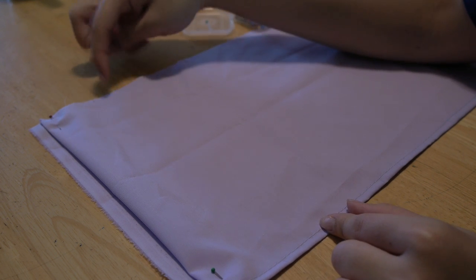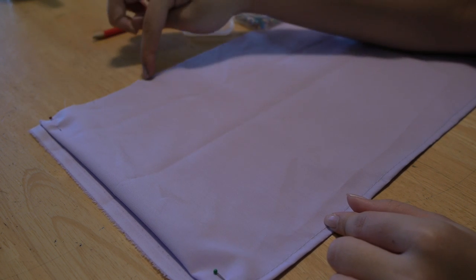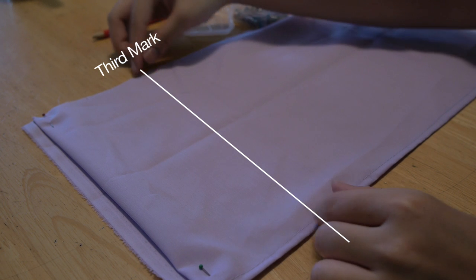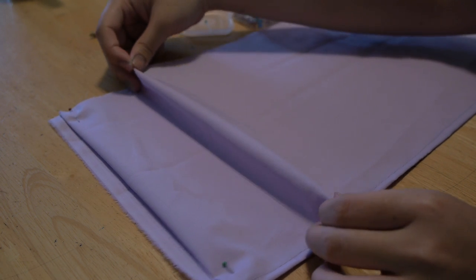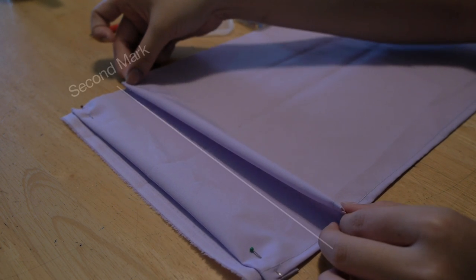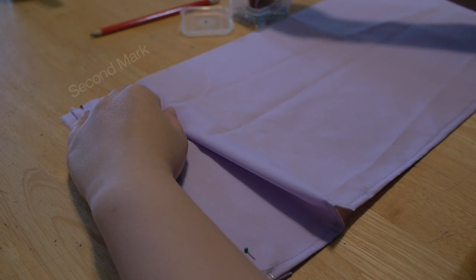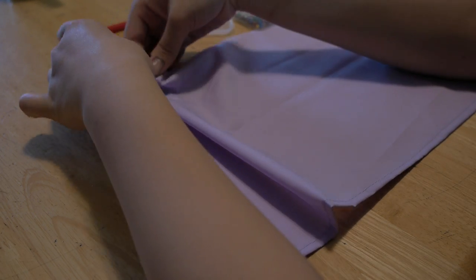To make the next pleat, skip the second mark and go to the third one. Pinch up at the third mark and bring it over to the second mark. Pin into place and repeat until you reach the end of the fabric.